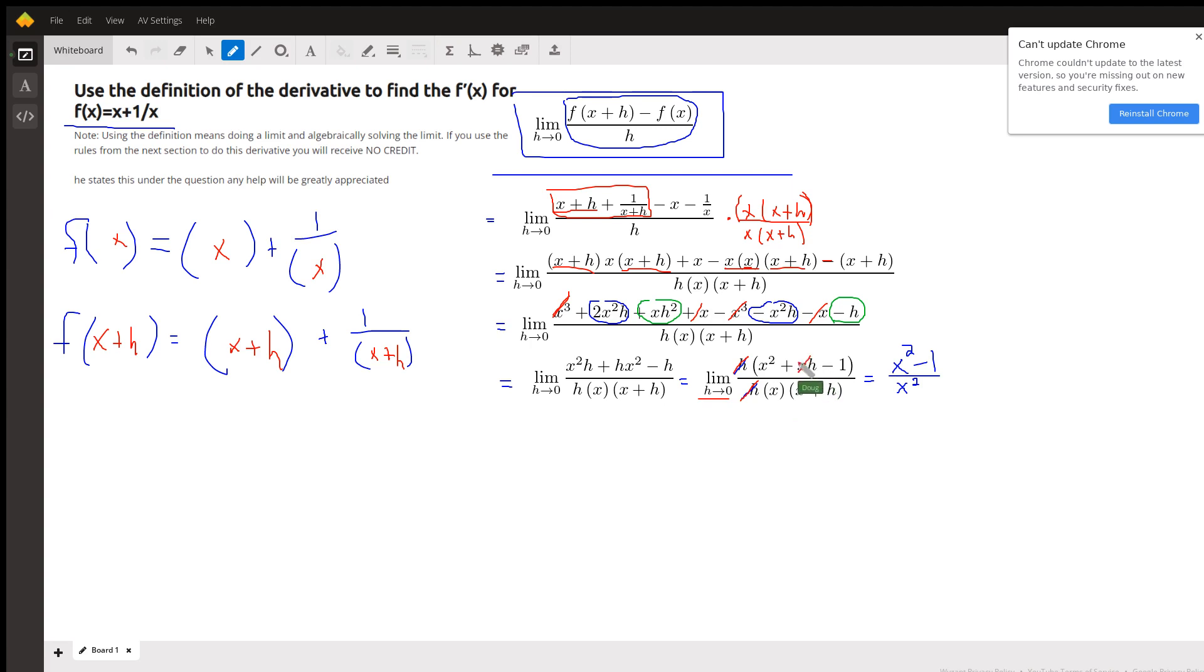So this term goes away when I take the limit. I get x squared minus 1. In the denominator this term disappears. x times x is x squared. So there's the derivative of the original function using the definition of derivative, the limit definition.